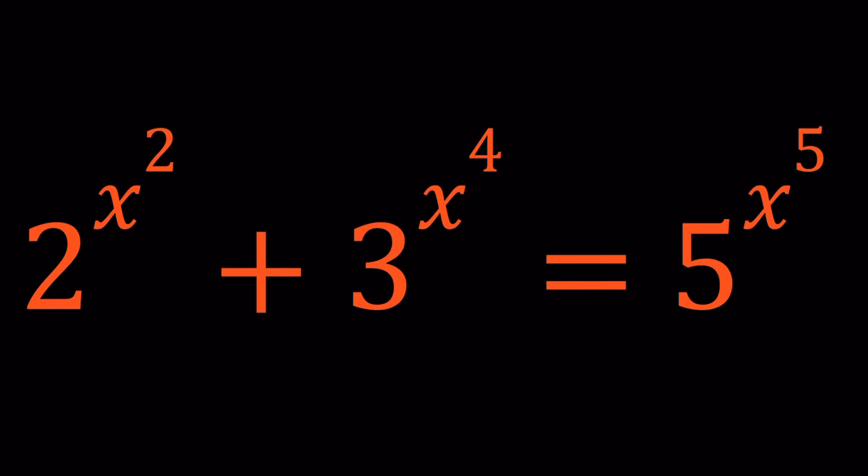Hello everyone. In this video we're going to be solving another beautiful problem from Romania. We have 2 to the power x squared plus 3 to the power x to the fourth equals 5 to the power x to the fifth, and we're going to be solving for x values.